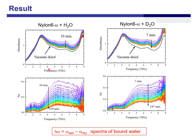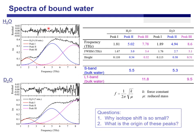This is the result. This is the spectra of Nylon 6 plus H2O, and this is the spectra with D2O. This black line shows the vacuum dried sample. After hydration, the absorption increases. By taking the difference between the wet sample and dry sample, we can see the spectra of bound water. The spectral pattern shows completely different from the original one.